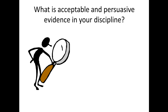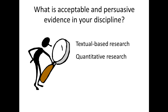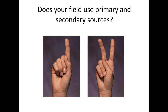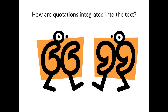What is acceptable and persuasive evidence in your discipline? For instance, is textual-based research accepted? If you're in history or literature, probably yes. Is quantitative research the norm? Qualitative? Or are mixed methods used? Do researchers combine qualitative and quantitative research? Does your field use primary and secondary sources? Primary is when the author speaks in the first person about their own original work; secondary is when another scholar speaks about that author's work. Are both accepted?